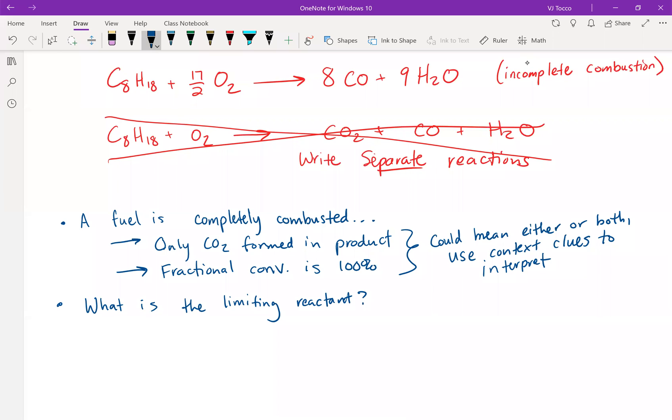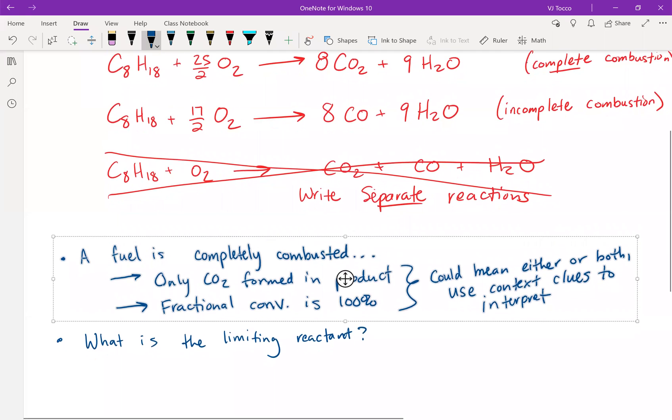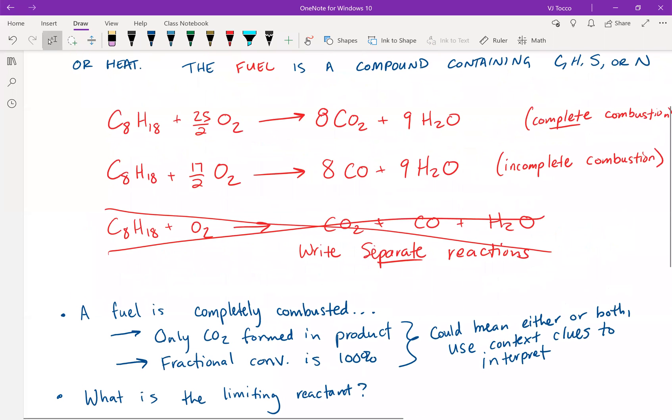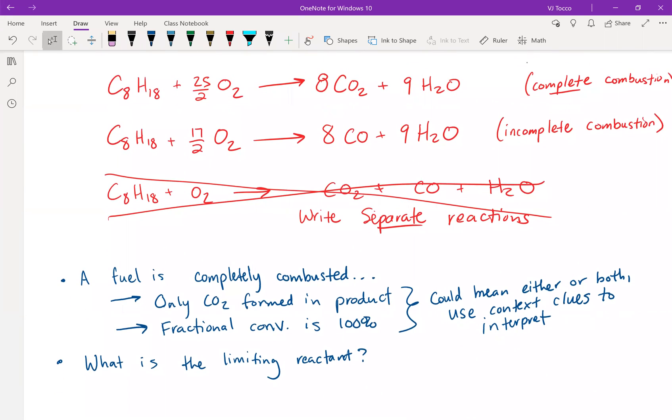A combustion problem will almost never tell you what the limiting reactant is. You are supposed to know which reactant would be limiting. In the case of octane being combusted with O2, the octane is the correct answer. That is because the fuel is oftentimes more expensive. O2 is free in the air, so you don't have to pay for O2 usually.